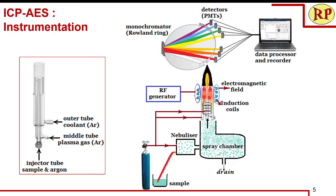Around the plasma torch we have induction coils — that is why we call it inductively coupled plasma, because the plasma is created due to the heat created in the induction coils. When the radio frequency signal is generated by the RF generator, an electromagnetic field is formed around the plasma torch, which helps in the formation of the plasma.